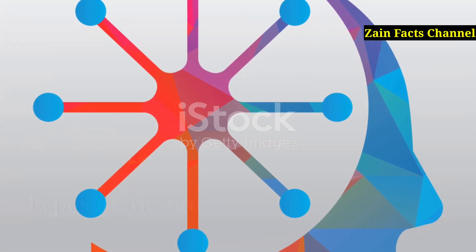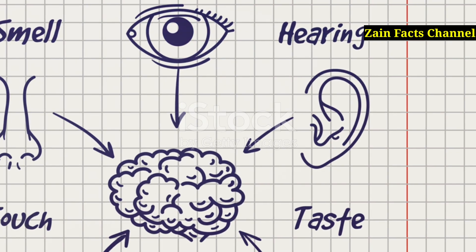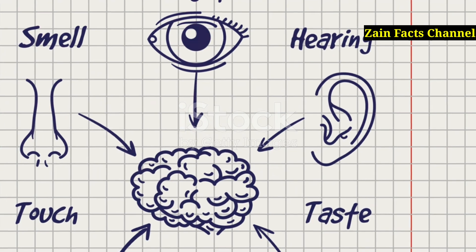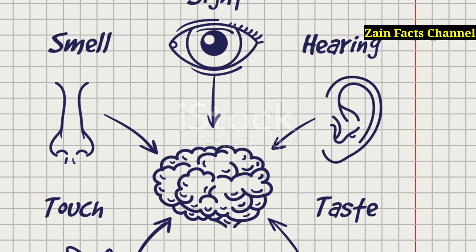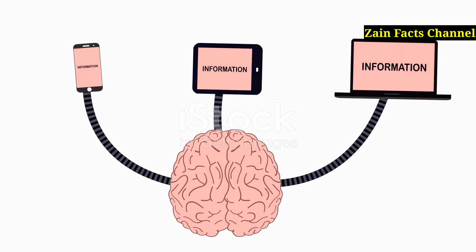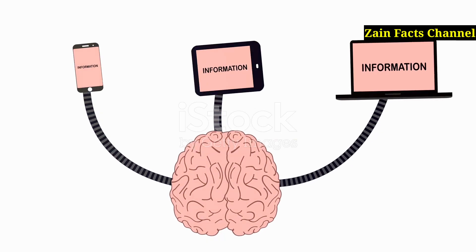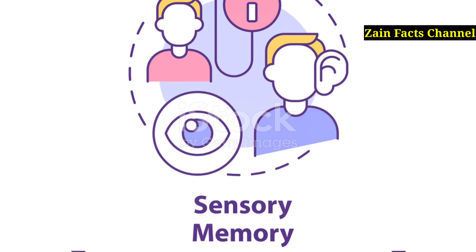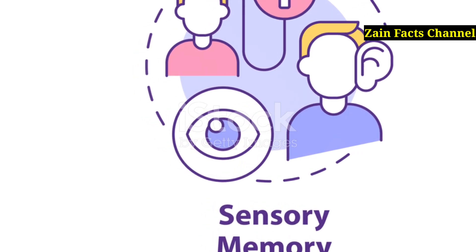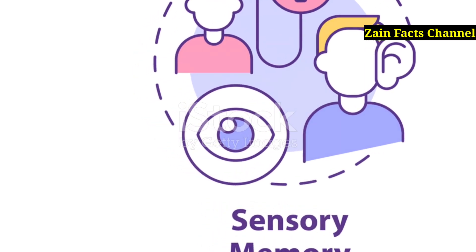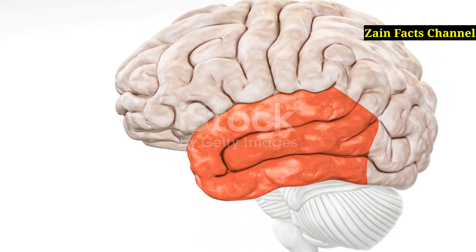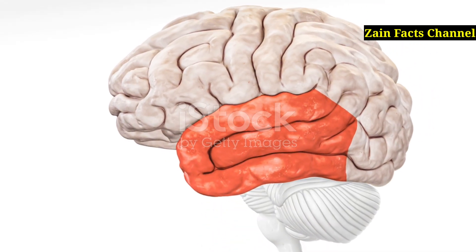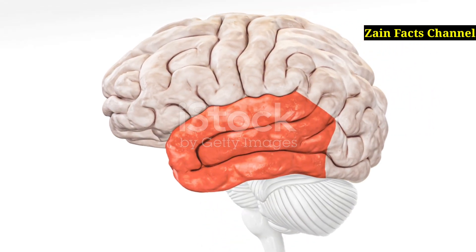Types of Memory. Sensory memory is the shortest-term element of memory. It acts as a buffer for stimuli received through the senses. Iconic memory, which is visual, and echoic memory, which is auditory, are types of sensory memory.